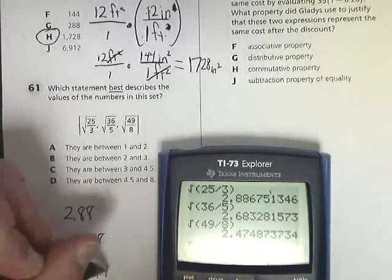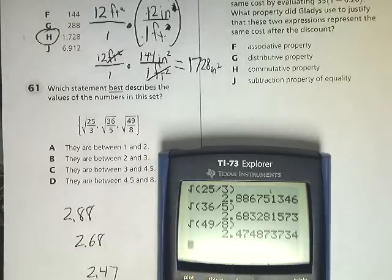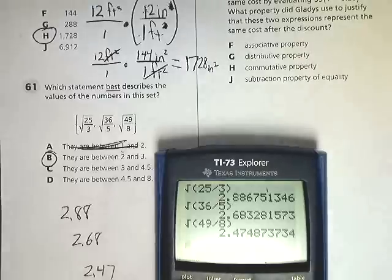So I have to think: Are they between 1 and 2? Well no, because those are all above 1, so that's totally out. Are they between 2 and 3? Absolutely they are. All of them are more than 2 and less than 3.